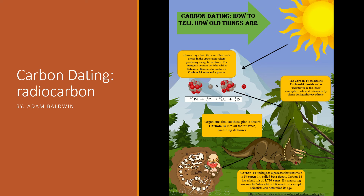Carbon-14 undergoes a process that returns it to nitrogen-14 called beta decay. Carbon-14 has a half-life of 5,730 years. This number will become important for us when we are going over math problems later on in the video. By simply measuring how much carbon-14 is left inside of a sample, scientists can determine its age.